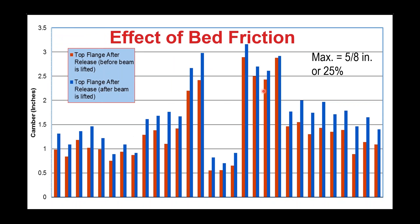The bed friction effect was captured for multiple beams by measuring deflection before and after lifting. Each time the beam was lifted and replaced, the blue line shows camber growth due to friction alleviation. We obtained as much as 5.8 inches of displacement from this effect, equal to 25% of total measured camber in some cases — a significant amount that needs to be accounted for.